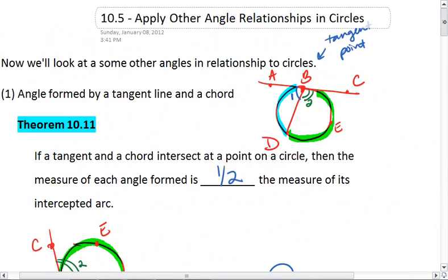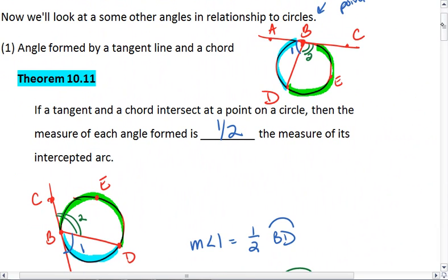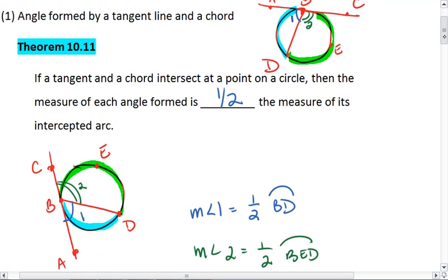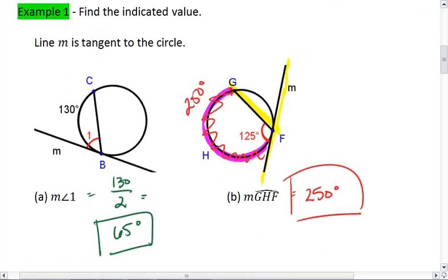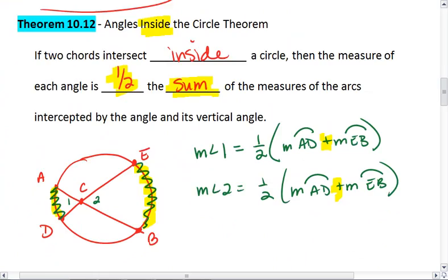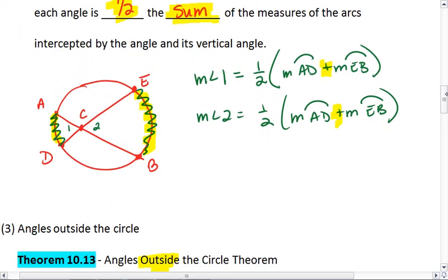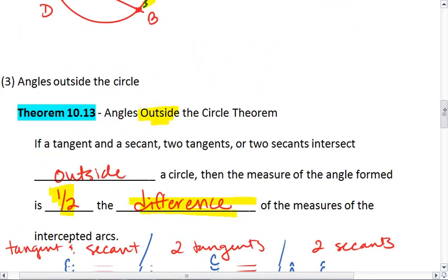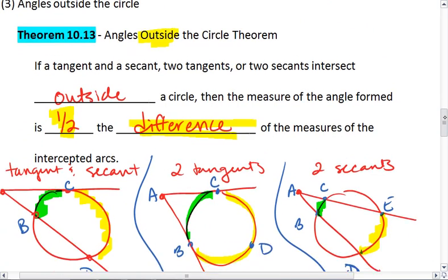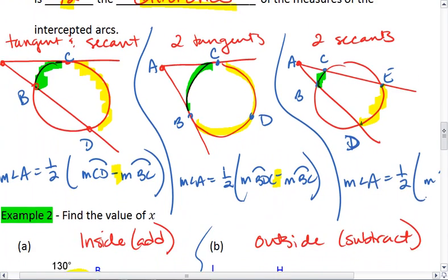So quick summary. We have angles that are on our circle, which case we are half of just the single intercepted arc. We have angles inside the circle, which is half of the sum of our two intercepted angles. And we have angles outside the circle, which is half of the difference of the two intercepted angles.